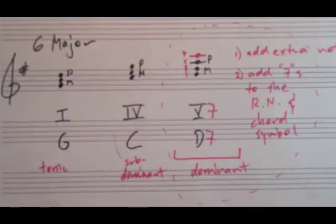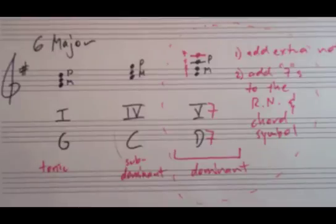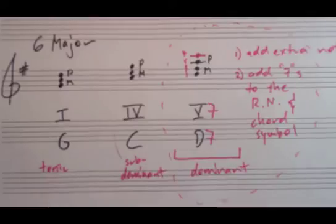So that is an overview of the diatonic triads, how they work, and how we get to the primary triads. And that's also an overview of how to build the primary triads in a major key. In the next video, I will give you a few examples of that. Thanks.